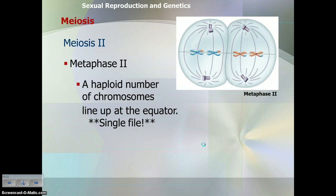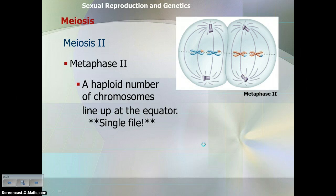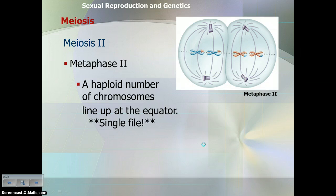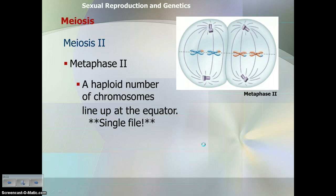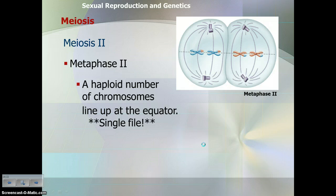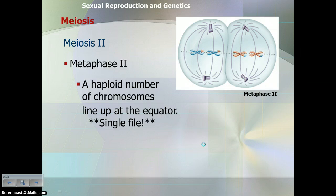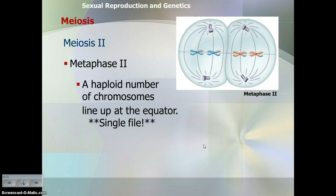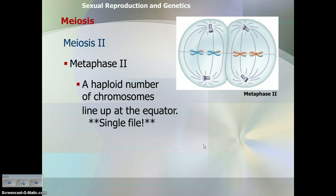In metaphase two of meiosis, the chromosomes at this point are haploid. Following cytokinesis of meiosis one, you have two haploid cells. Now in meiosis two, in metaphase two, those haploid chromosomes line up single file at the equator — very similar to metaphase of mitosis, except now in two cells. Single file at the equator is the big difference between metaphase one and metaphase two of meiosis.